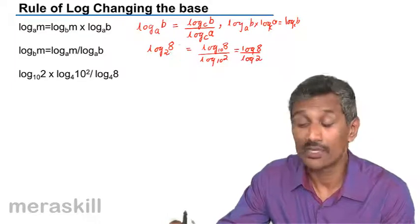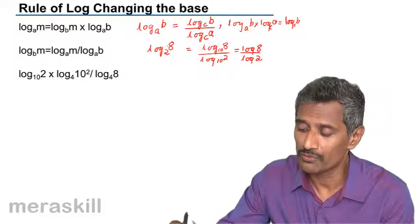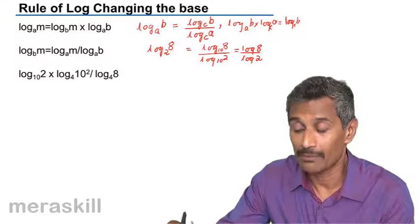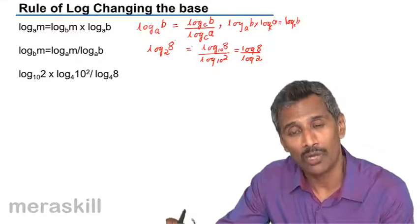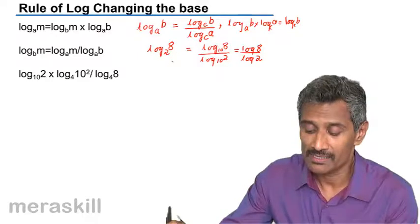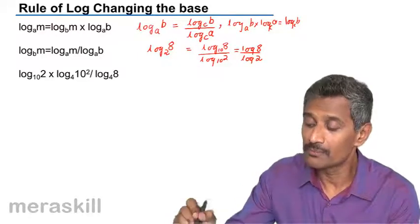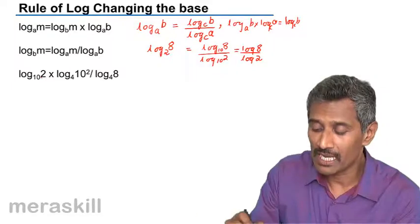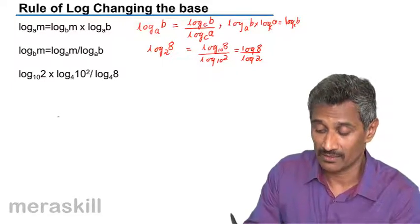So in other words, just an offshoot of the rule: whenever you need to change the base to 10, you can just write log A to the base B as nothing but log A upon log B, provided the base is 10. So this is a simple change of base rule. Let us see how we can do this particular thing.